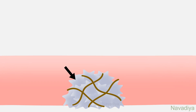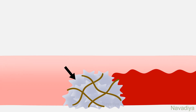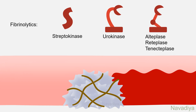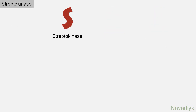Let's say your patient has an unwanted clot in his blood vessel. It is obstructing the blood flow, so you want to get rid of it. The drugs we will use for this are fibrinolytics, the first topic of this video. These include streptokinase, urokinase, alteplase, reteplase, and tenecteplase. We will first see each drug's individual features — mainly the mechanism of action — and then common features like usage, adverse events, and contraindications.